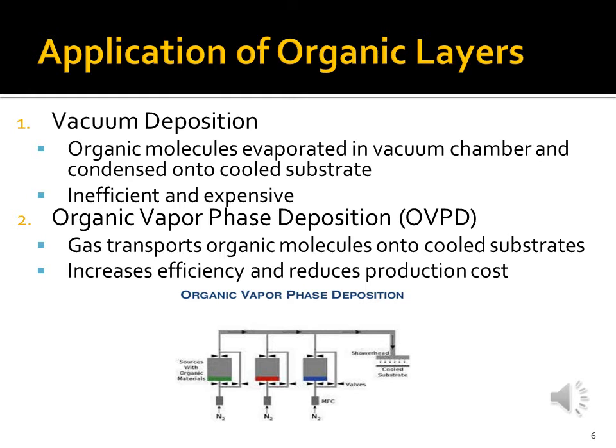Let's look now at some of the construction methods used to implant the organic material onto an OLED. You'll find that the three methods we're about to go over are similar to what we saw in Chapter 3 of the course, which dealt with how devices are fabricated. The first method is called vacuum deposition. In this method, organic molecules are evaporated and allowed to condense onto a cooled substrate, all inside a sealed vacuum chamber. The problem with this method, however, is that it's quite inefficient and quite expensive, which is why manufacturers tend to lean more towards the other two methods.